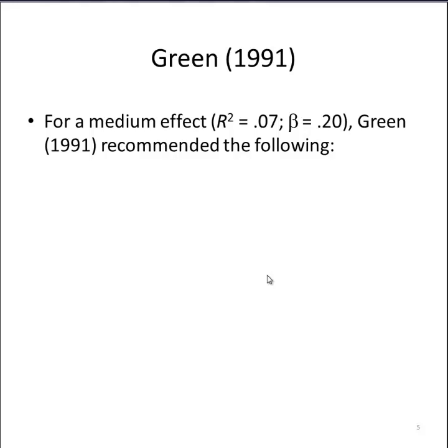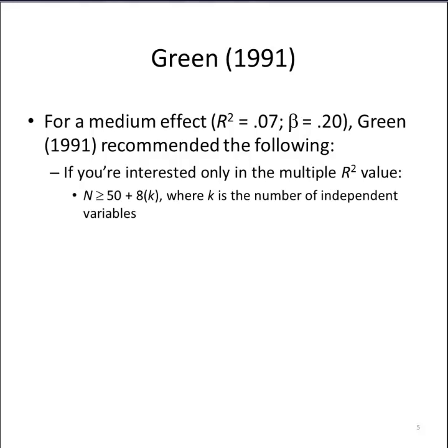So Green, with his considerations in mind—statistical power and the two purposes of conducting a multiple regression—came up with essentially some rules of thumb. But he did have some qualifiers. For a medium effect size of R² = 0.07, so 7% of the variance in the dependent variable is being accounted for by the independent variables, and the beta weights on average are around 0.2, Green recommended the following for 80% power. If you're interested only in the multiple R² value, then you should be using this little formula.